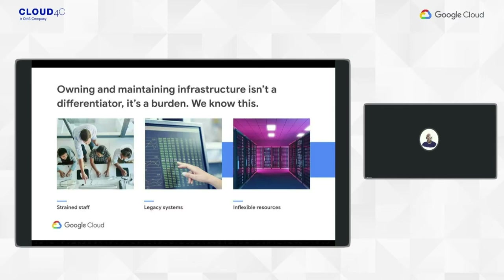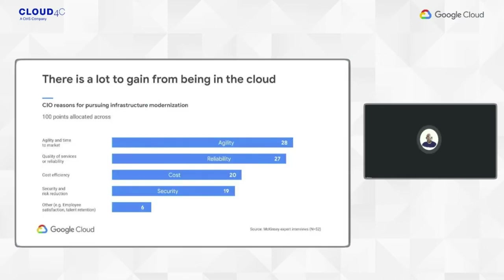Over time, on-premise hardware becomes typically difficult to scale out. When you need to scale to meet critical requirements like Black Friday sales or Cyber Mondays, your infrastructure is disrupted because you don't have the flexibility of cloud to scale on demand. These are a few of the critical aspects we've seen with customers in their infrastructure journey that act as disruptors in the digital transformation journey. I'd like to highlight a report from McKinsey — a well-known industry name — who conducted a survey across CIOs.